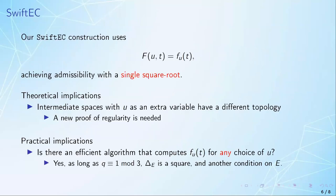Now, our new SwiftEC construction uses a domain twice as large, but now the second entry to the function is u itself, so rather than being a fixed parameter, it becomes a second variable. What we gain is that we're back to doing a single square root, meaning that our construction should be roughly twice as fast.